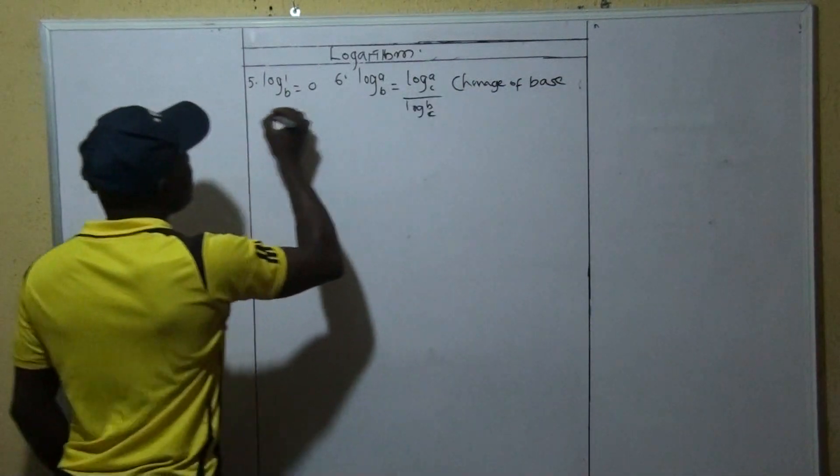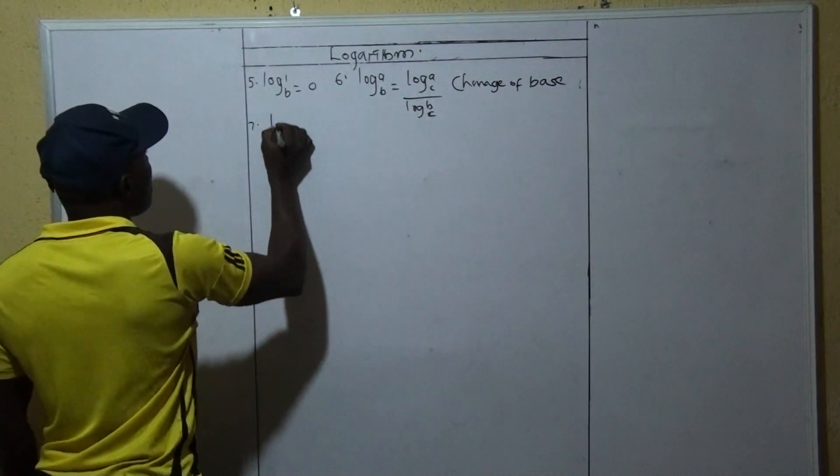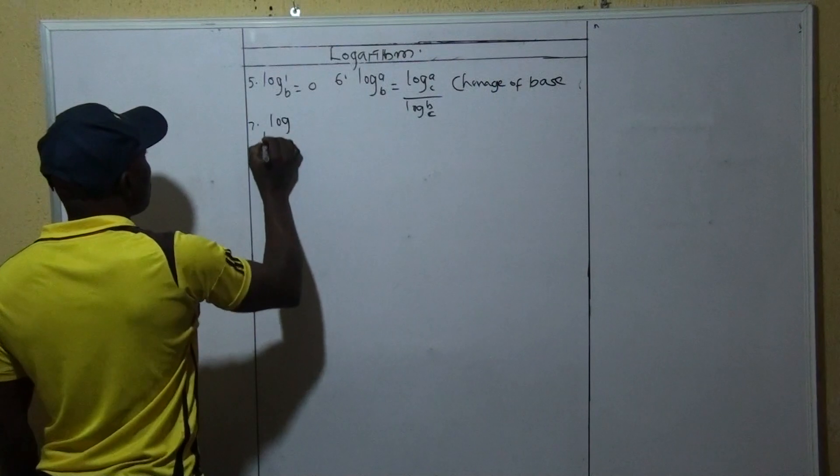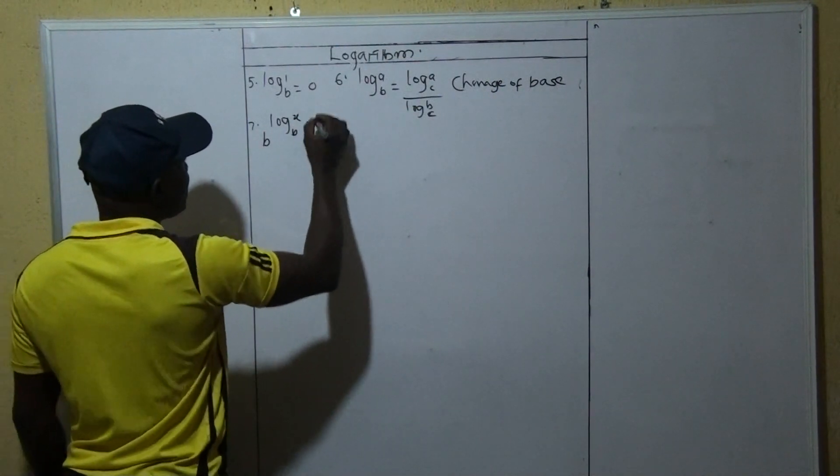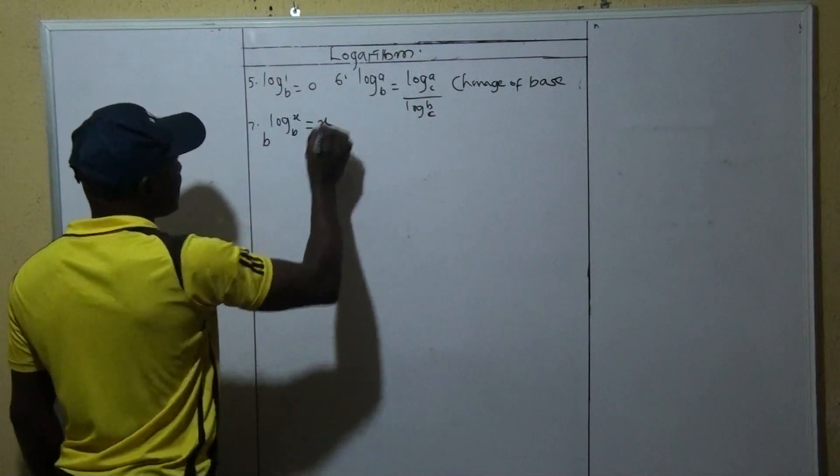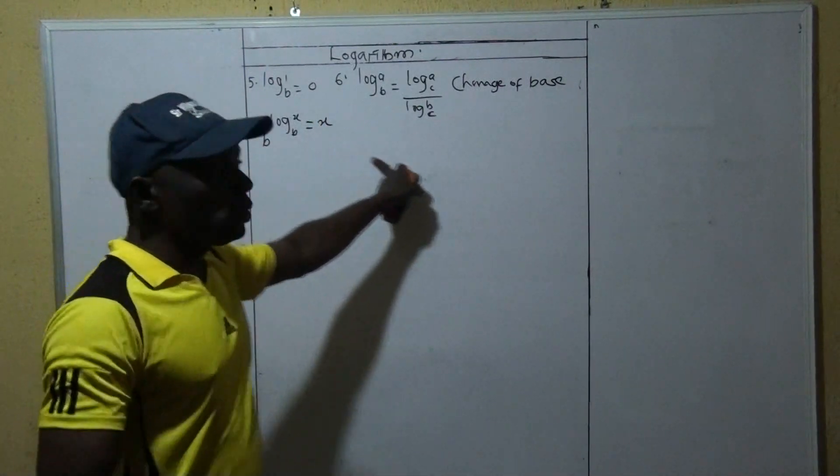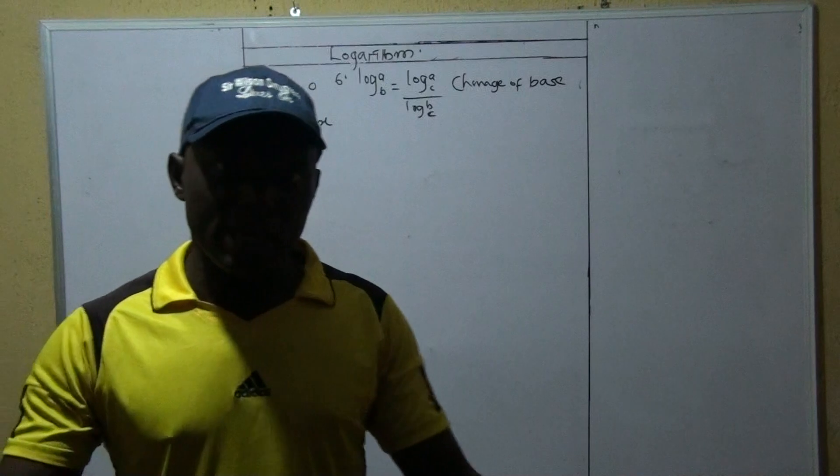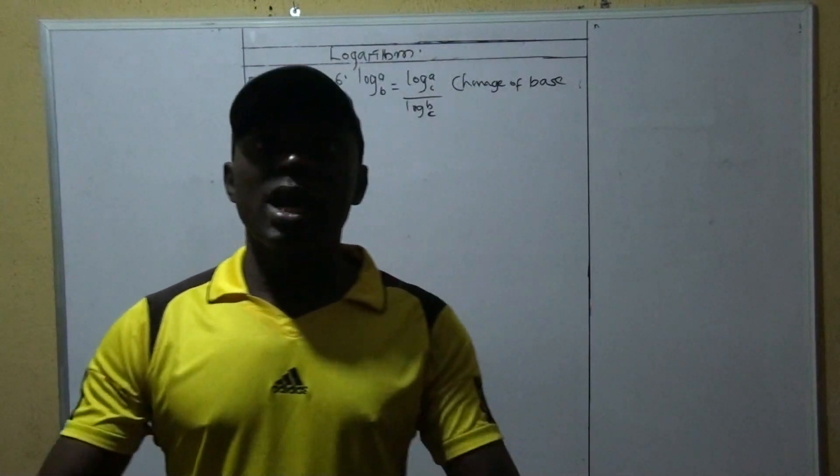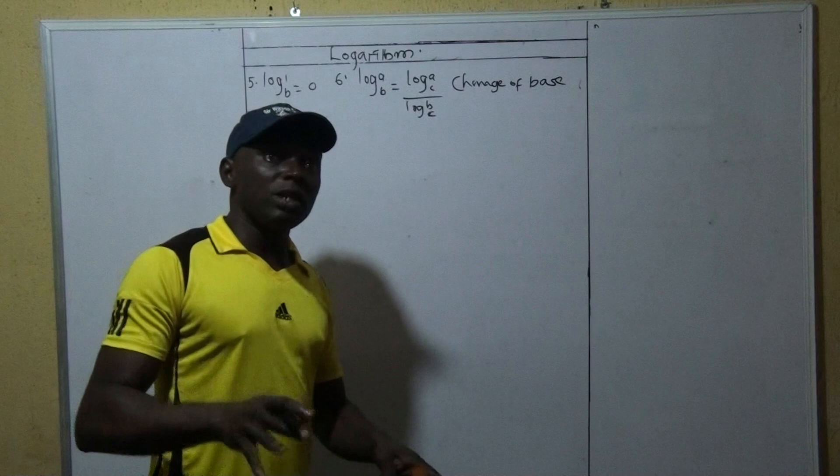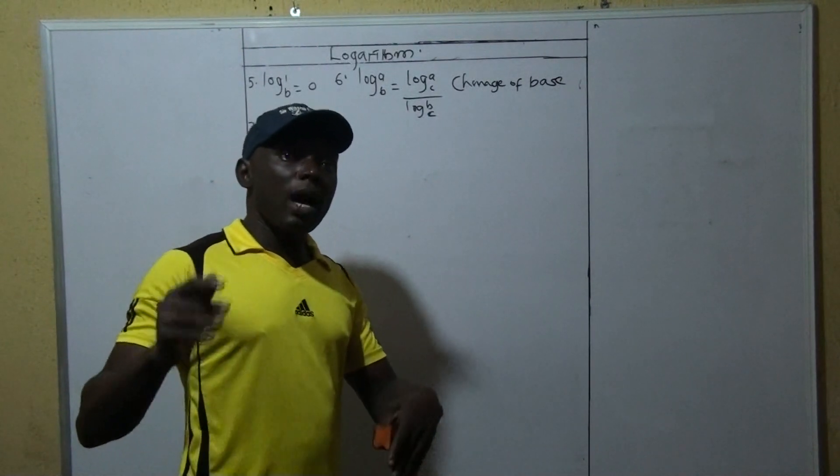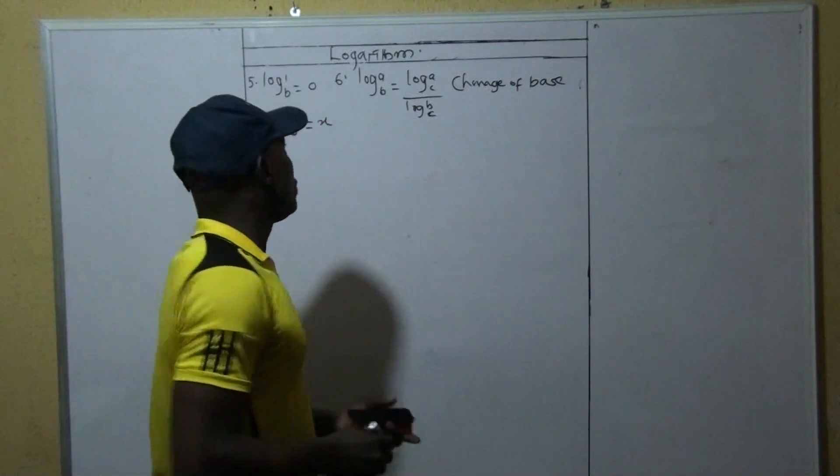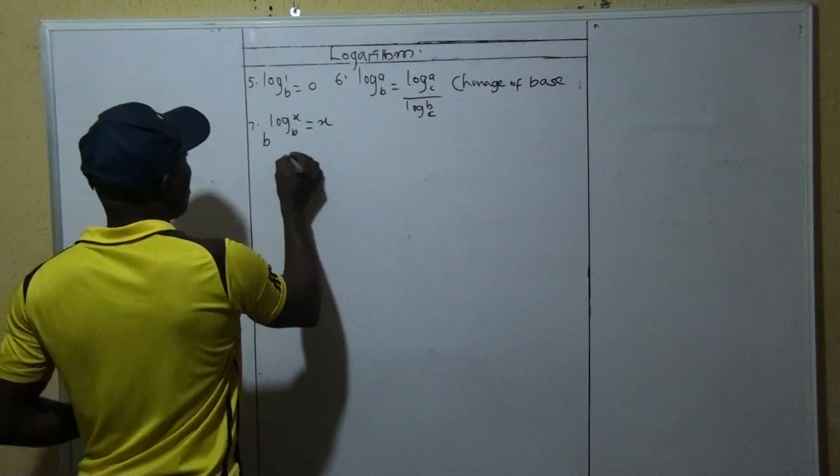This is what we call change of base. Then the seventh law, which is B raised to log X to base B is equal to X. So these are what we're going to look at in this class. We're going to look at their proofs. The proofs are very important as well, so it enables us to know them so that when you see questions you quickly know how and where to apply them.